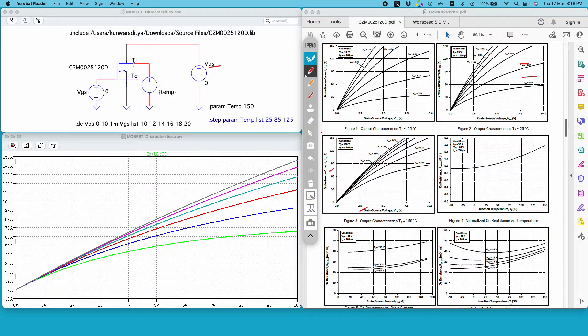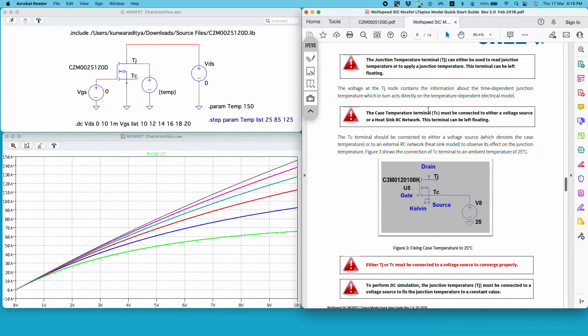This model has two extra terminals: TJ and TC. TC represents the case temperature and TJ represents the junction temperature. They have their manual on how to use this spice model.